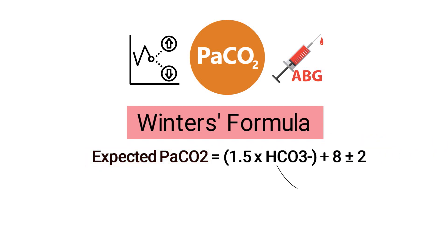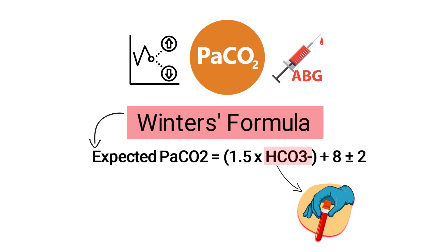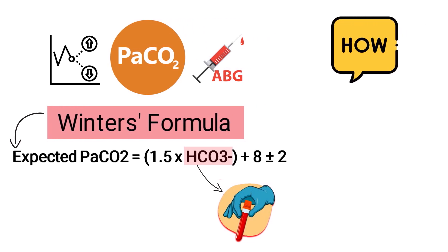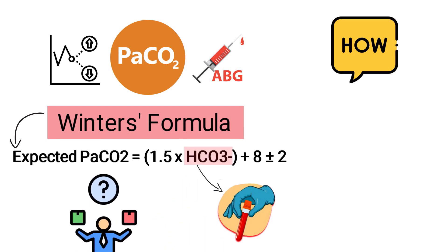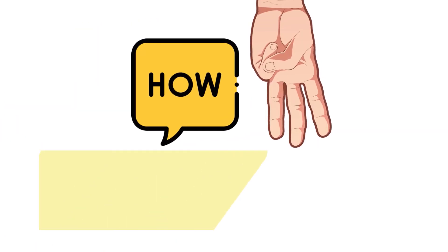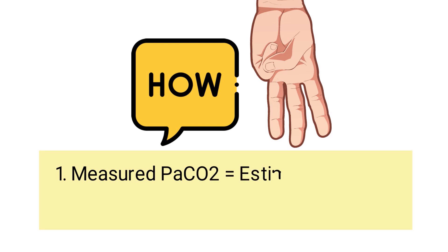The patient's bicarbonate value is obtained by collecting and analyzing a sample of arterial blood. You can then use Winter's formula to determine the expected PaCO2 by inserting the bicarb value into the equation. You can estimate a patient's PaCO2 simply by inserting the measured bicarb value, then compare the estimated PaCO2 to the patient's actual measured PaCO2.